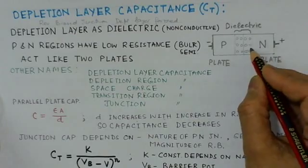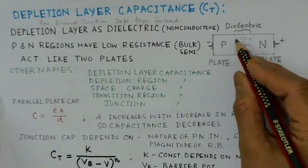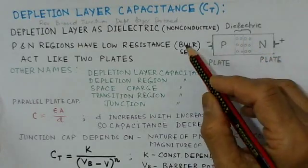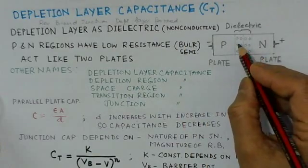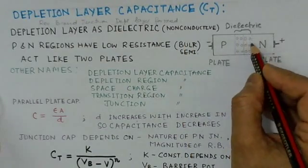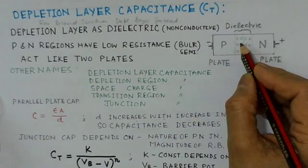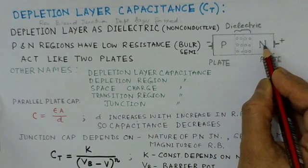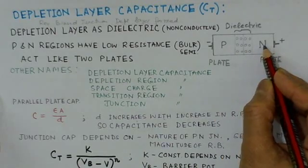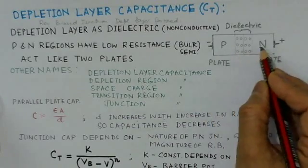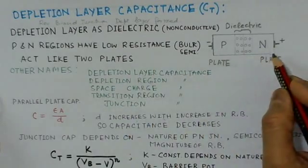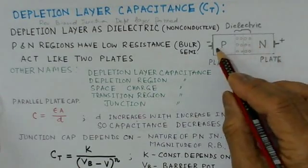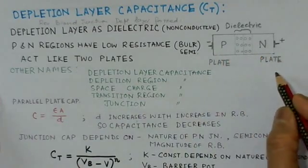So in this PN junction, this region acts like a dielectric since it is non-conductive. And the P and N regions, they are basically doped semiconductors, so they have low resistance. So they behave like a conductor. So they can be considered as a plate of this capacitor. So they act like a plate here.